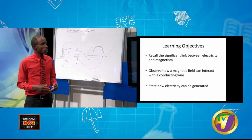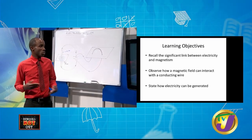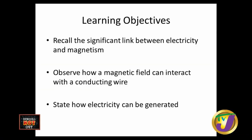In this lesson, we have certain objectives we'd want to meet. We'd want to recall that there is a link between electricity and magnetism. We also want to look at how a magnetic field can interact with a conducting wire. And lastly, for this section, we want to state how electricity can be generated from a magnetic field.